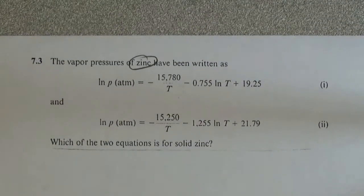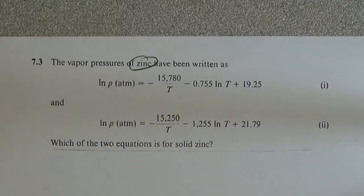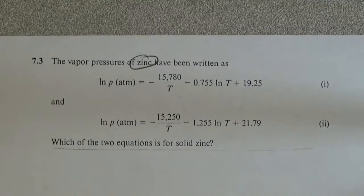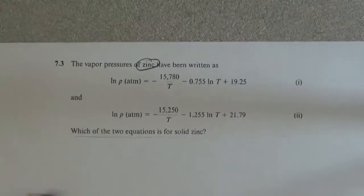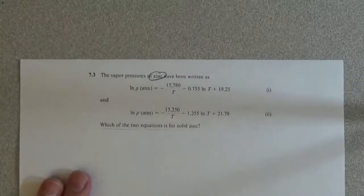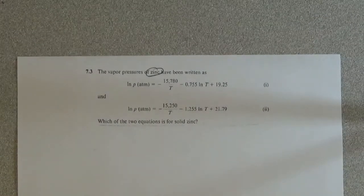One solution is to look in the back of your book because you have all the data, and that'll tell you which one it is. Another solution is to substitute some numbers and look at what comes out.